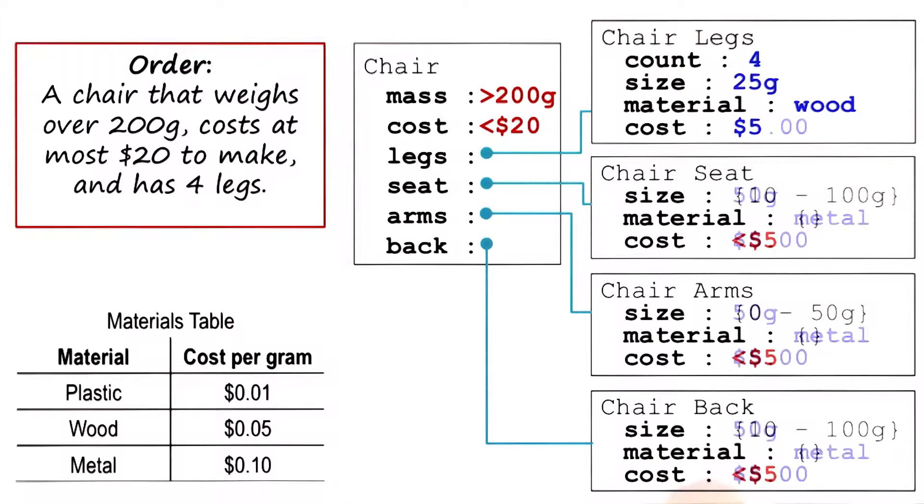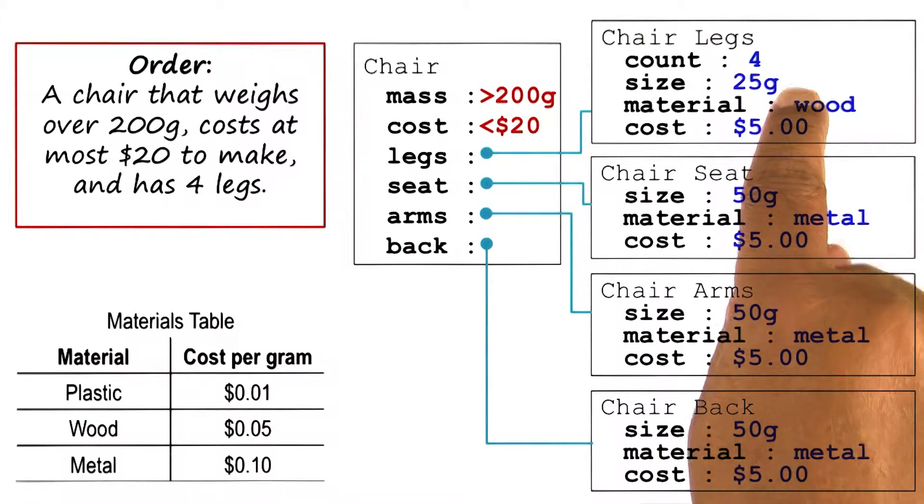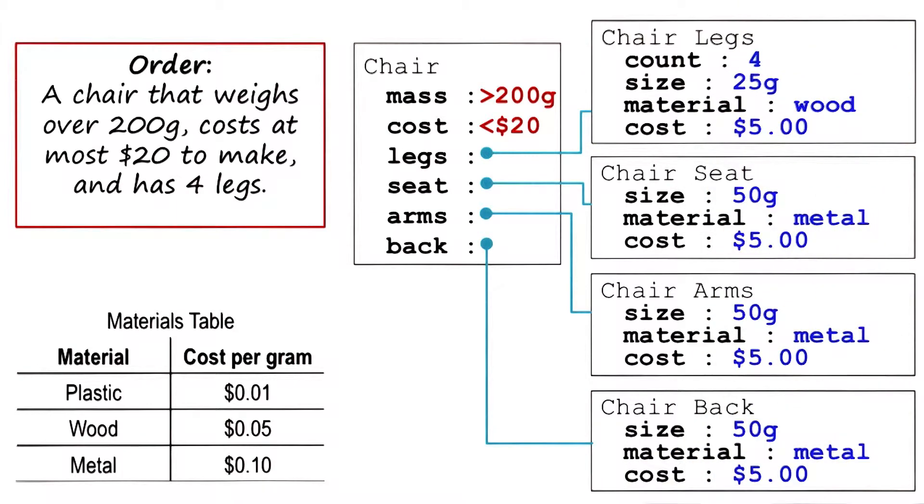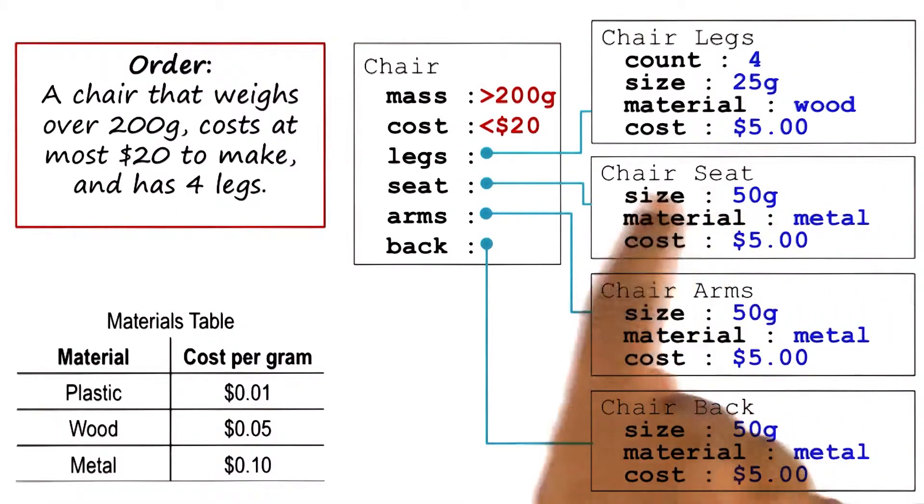And we can do the same for the other components. As we assign values to the variables of each of these components, we get a complete arrangement of all the components here, with values assigned to each of the variables.